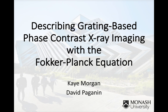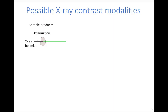Let's look first at phase contrast X-ray imaging. Conventional X-ray imaging utilises attenuation. If we imagine a grey jelly bean-like structure as a sample with a very small X-ray beam — a beamlet — passing through it, we would see that the height and intensity of that beamlet decrease as it passes through an attenuating sample.